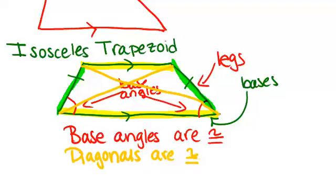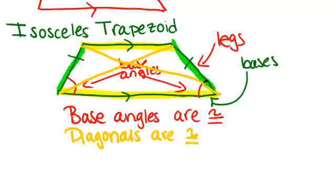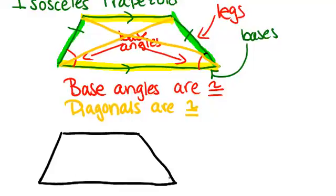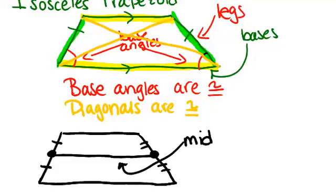All trapezoids, whether isosceles or not, have a mid-segment. The mid-segment is formed by taking the midpoint of each of the two non-base sides and connecting them. Because these are midpoints, we have pairs of congruent segments.